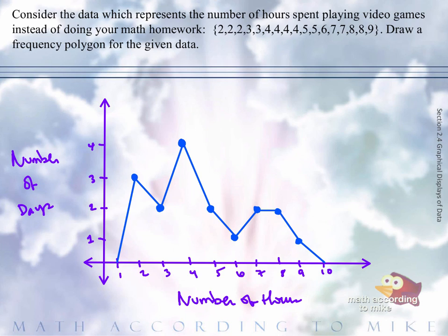So what we have in blue there is our frequency polygon for the given data. Now, as always, you should have a title, and the title would be just these words here: number of hours spent playing video games.